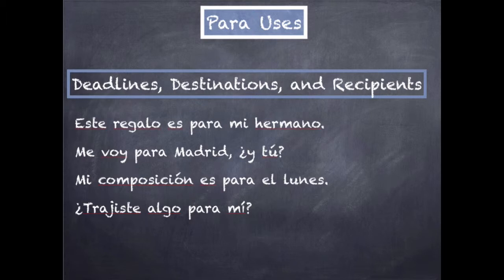More uses for para are to indicate deadlines, destinations, and recipients. 'Este regalo es para mi hermano.' It has that same feeling to it — it's the finalization of the thing, just like 'in order to' was the reason why I was doing something. 'Este regalo es para mi hermano' — it's for my brother. He's the one that's going to receive it.